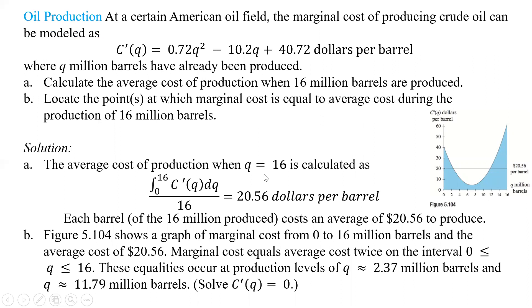In a certain American oil field, the marginal cost of producing crude oil can be modeled as c prime of q equals that function. We're supposed to calculate the average cost of production when 16 million barrels are produced. 16 million, that's going to be our b, so we're going to take the integral of this from 0 to b of this part here, divided by b. 0 to 16 divided by 16 of c prime of q - we plug that into our calculator, and we get $20.56 per barrel. If we plot this original function, that's the quadratic here. This over here, the straight line, that's our average cost per barrel.